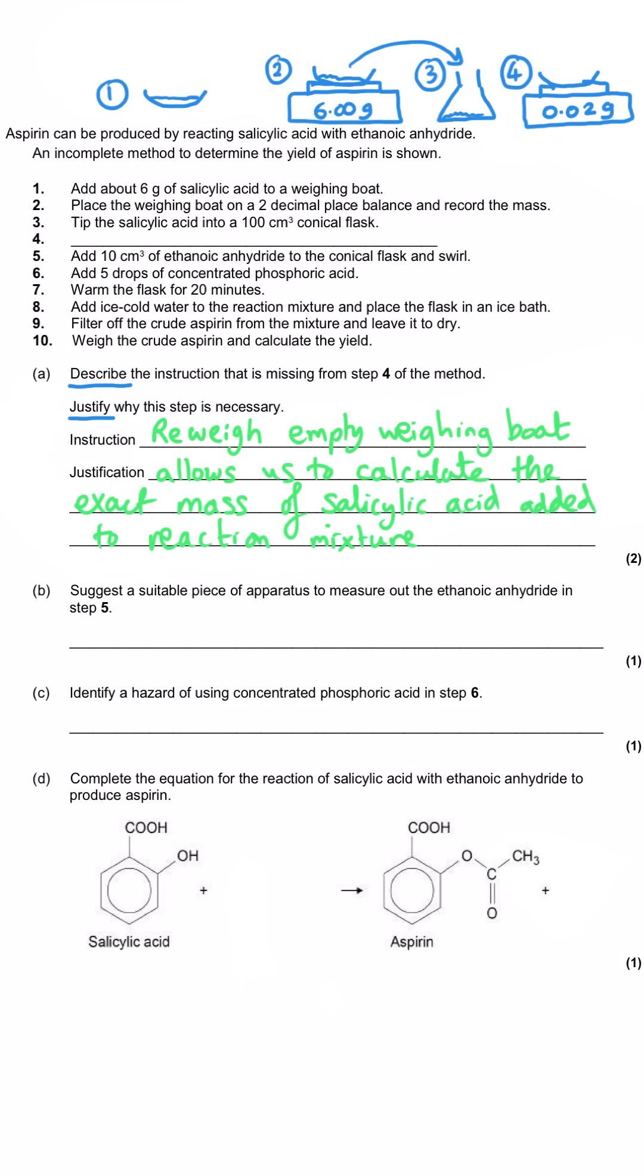What we do is calculate the exact mass of salicylic acid that's been added to the reaction mixture using a process called weighing by the difference. So we take the mass of the weighing boat with the 6 grams of salicylic acid, add the 6 grams of salicylic acid, and then re-weigh the boat to find out if that 6 really did transfer or if it was just less than 6 that was transferred. The question moves on to step 5 of the method and it says add 10 cm cubed of ethanoic anhydride to the conical flask and swirl. The question says what piece of apparatus would be suitable to measure that 10 cm cubed?